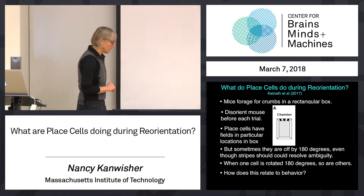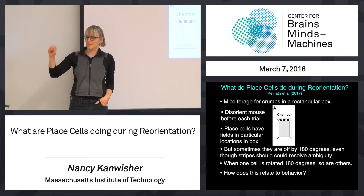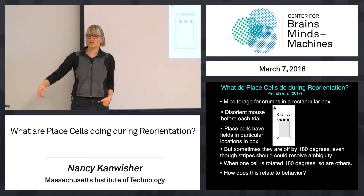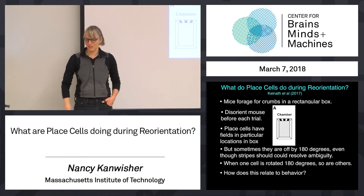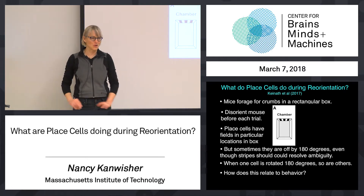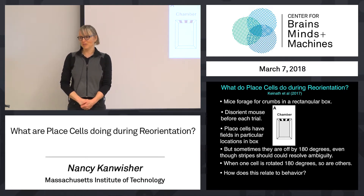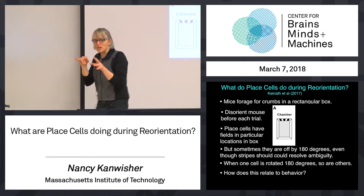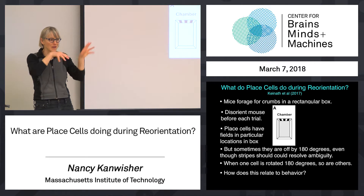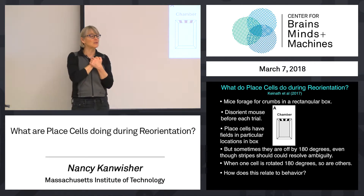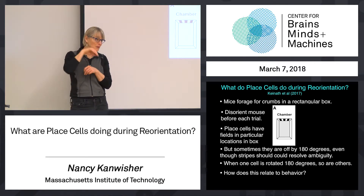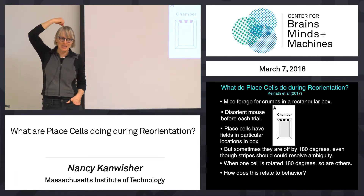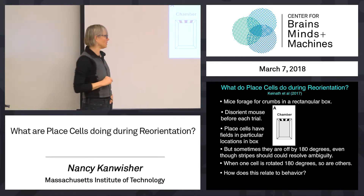First, they don't hide stuff in a corner — we'll get to that in a second. They scatter, I think it's chocolate granola crumbs or something, evenly throughout the whole box. So the mouse is doing what a mouse loves to do, which is go around and sniff and find little chocolate crumbs all around the box. That's good because it enables you to map the whole place field. You want the mouse to go all around the box so you can map the place field with your electrode next to a hippocampal cell.